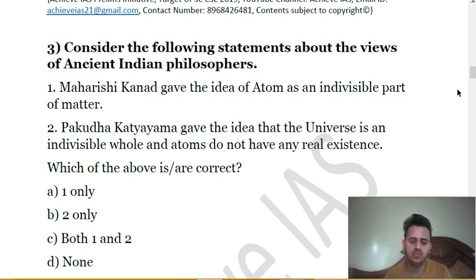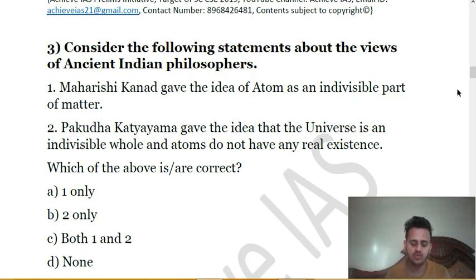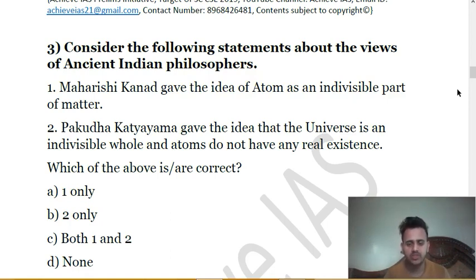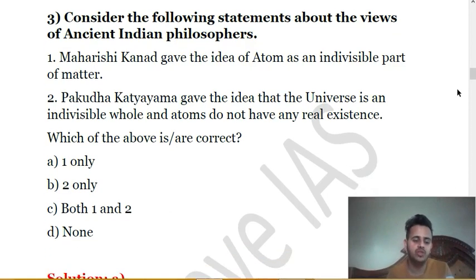The concept of the indivisible nature of matter was given by Maharishi Kanad. When matter is kept being divided, a stage is reached where further division does not take place — he named it Pramanu, known in English as atom. Pakudha Katyayana actually built upon this philosophy, elaborating that matter is composed of combinations of atoms in different manners. He did not say the universe is an indivisible whole. So only the first statement is correct.